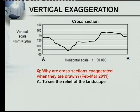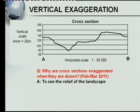The first thing — and this is a very popular question: why are cross-sections exaggerated when they are drawn? Look at the exam question paper from which it came — it came from the February–March exam 2011. They ask you why the vertical scale must be exaggerated. The reason is to see the relief of the landscape. If your vertical scale is not exaggerated, your line is going to appear very nearly like a straight line. But when we exaggerate the vertical scale, you will be able to see the valleys, the rivers, and the mountains.